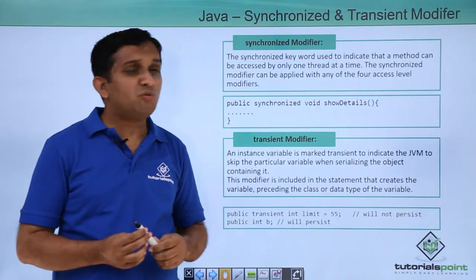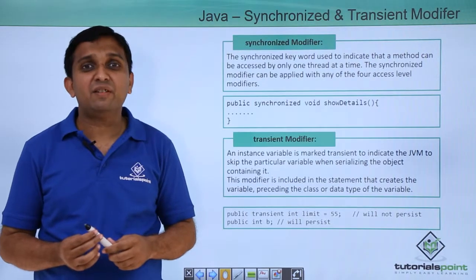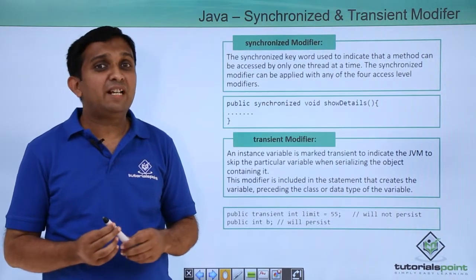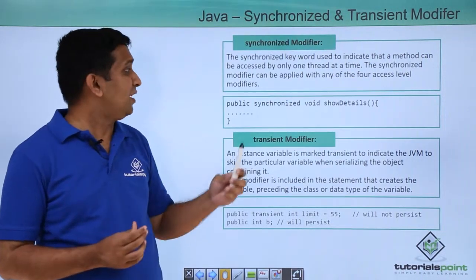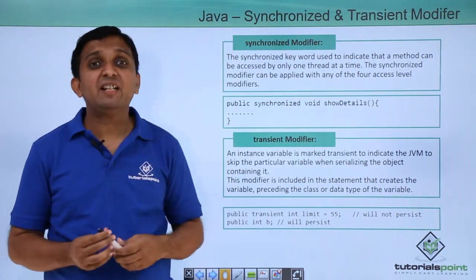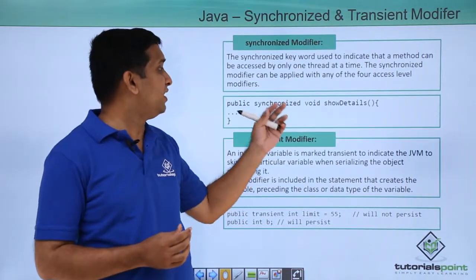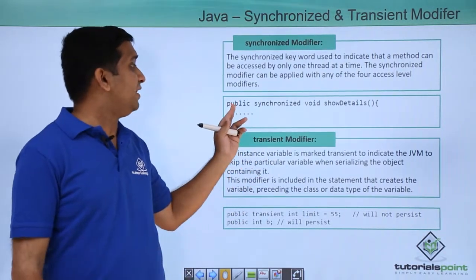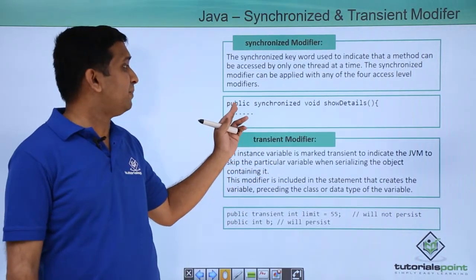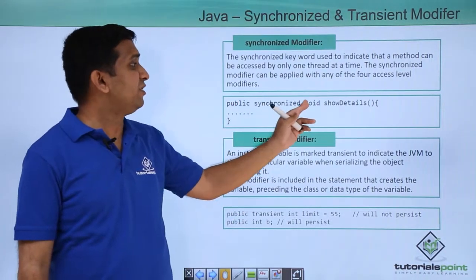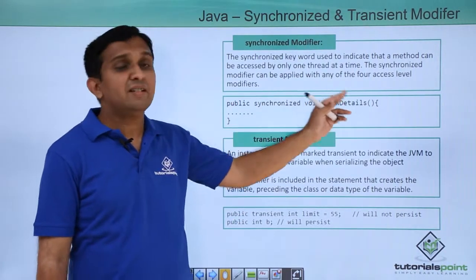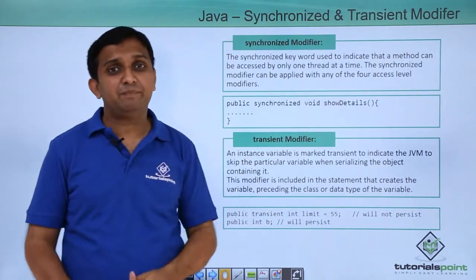If you do not want thread interference, then you have to declare the method which is causing thread interference as a synchronized method. It is declared as public synchronized void method name.